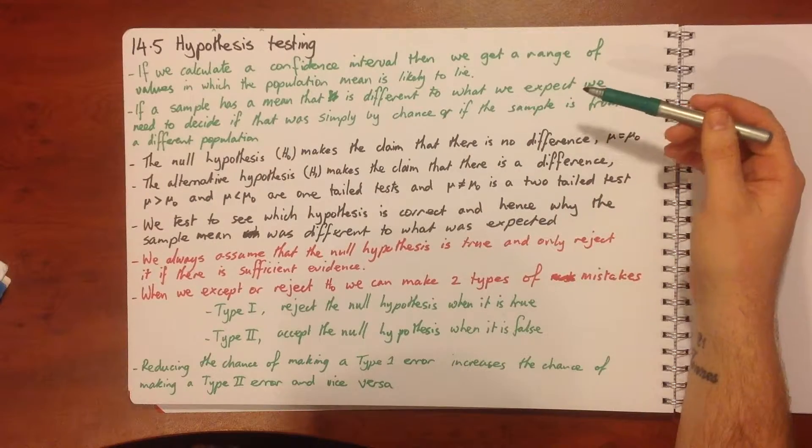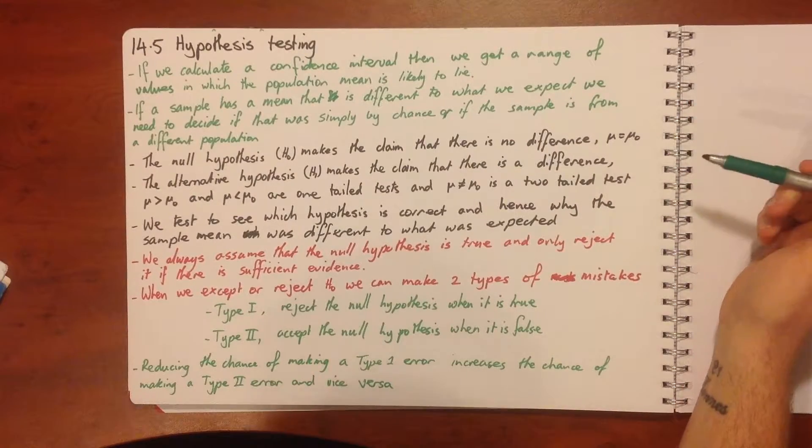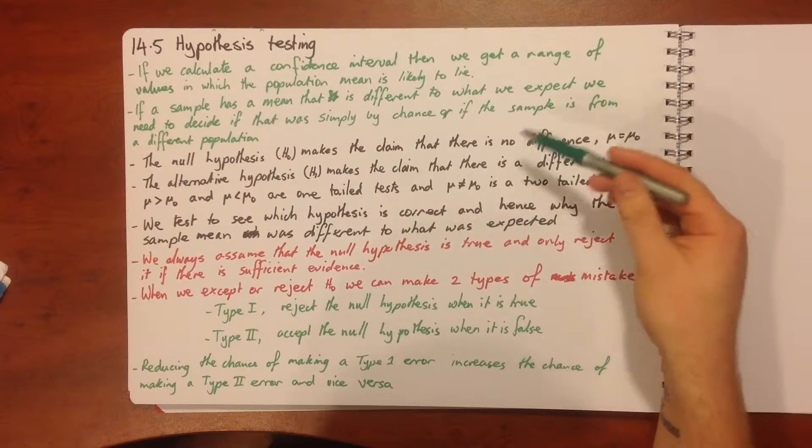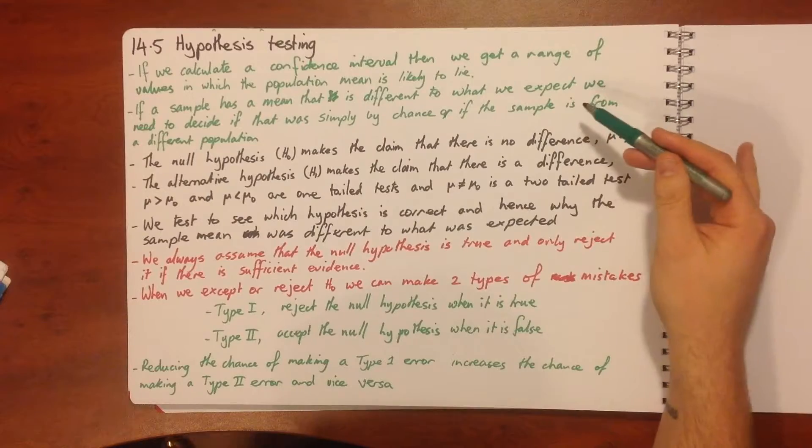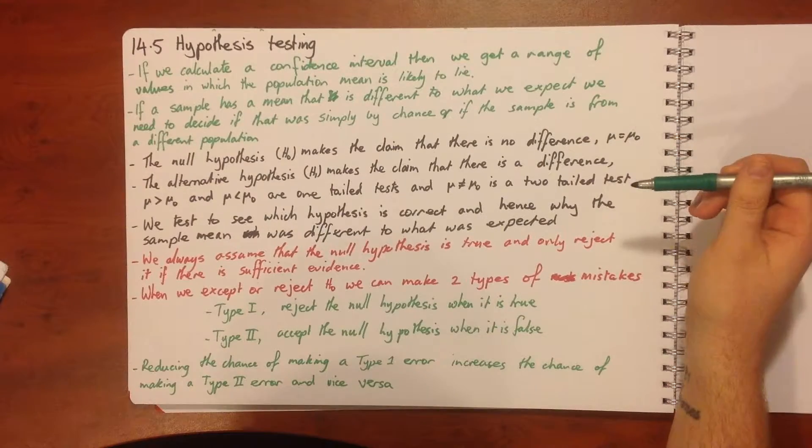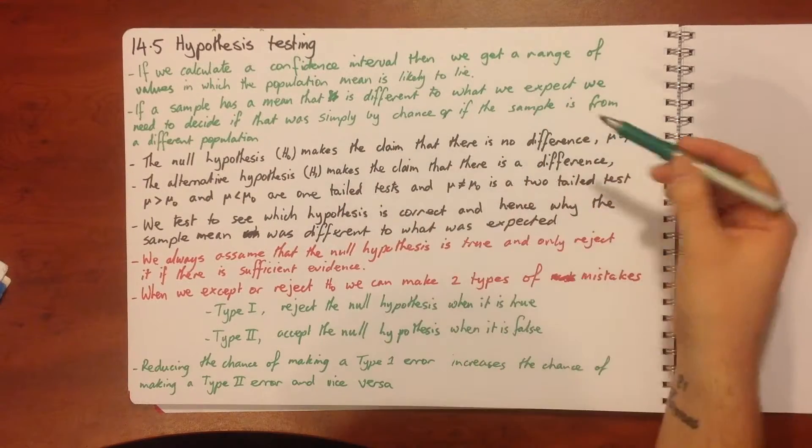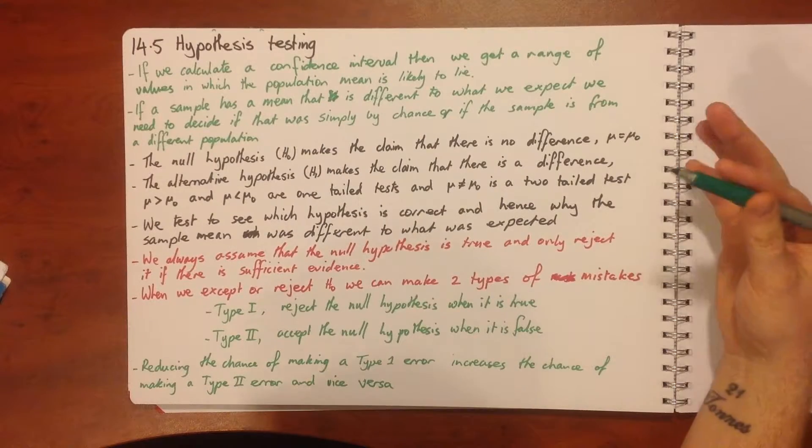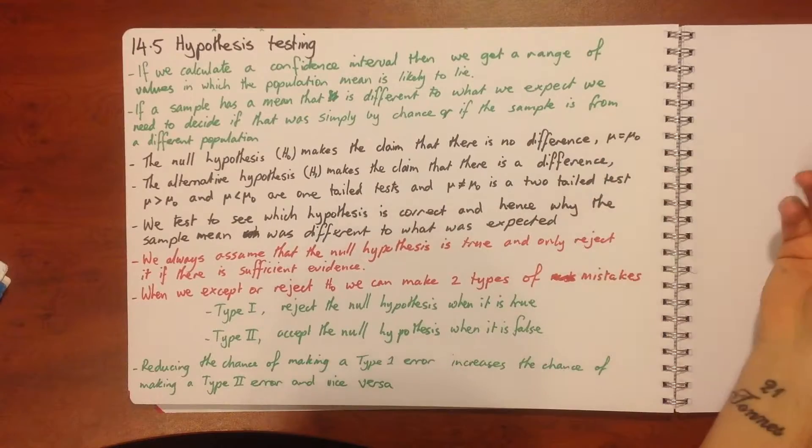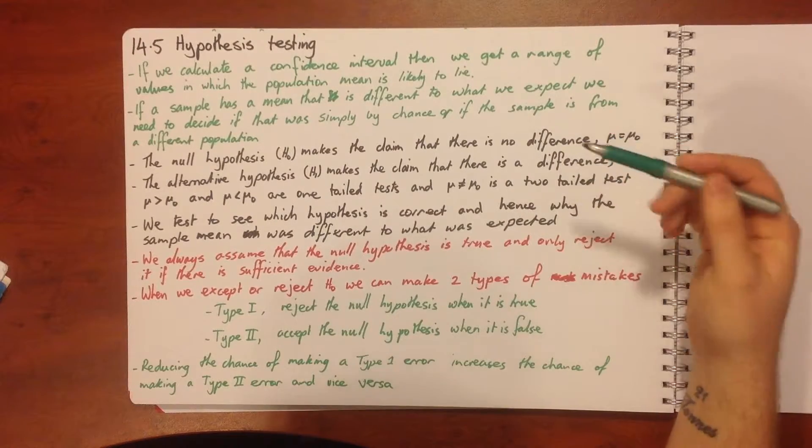If a sample has a mean that is different from what we expect we need to decide if that was simply by chance or if the sample is from a different population. So if we have a range of values for the mean and we're 99% sure that our mean is going to fall within that range,